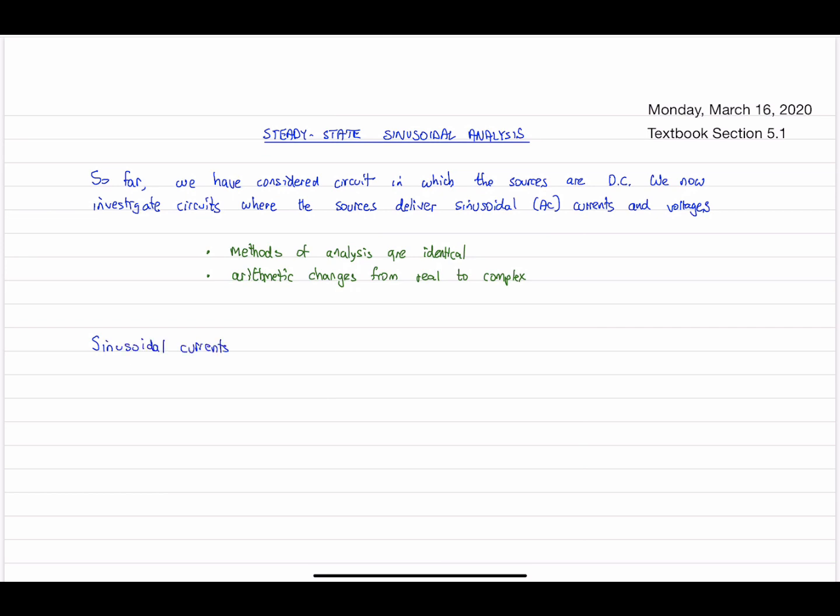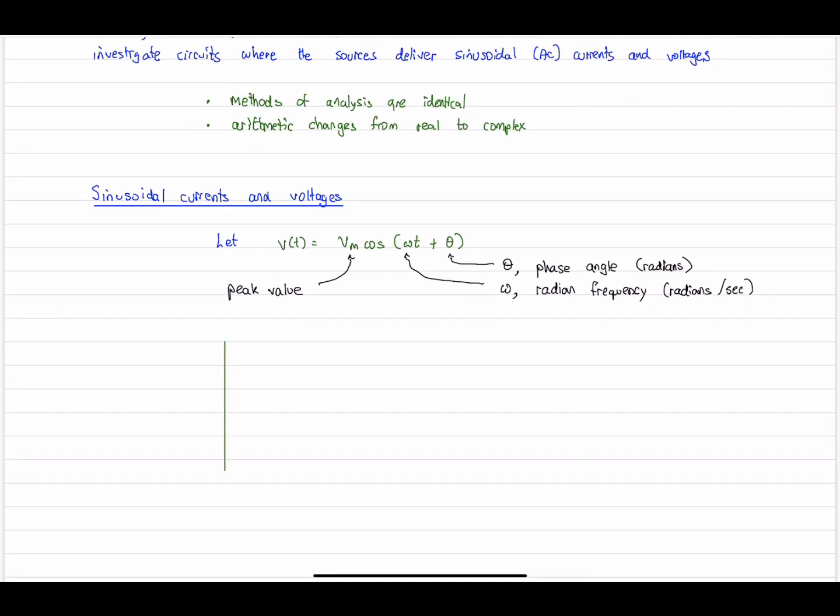So where we'll start is with a quick review of sinusoidal currents and voltages. Let our voltage variable, V(t), note the t, it's time varying, equal to a constant, Vm times cos(ωt + θ). Vm is its magnitude or peak value. Theta is the phase angle given in radians. And omega is the radian frequency, also in radians, but radians per second.